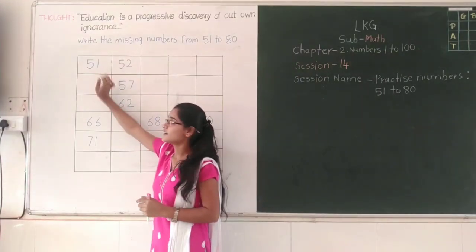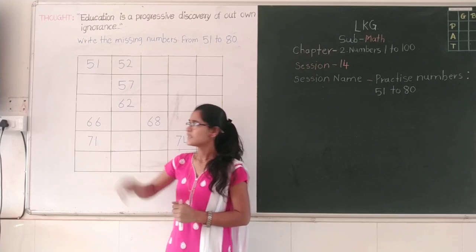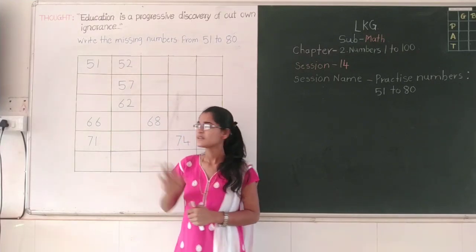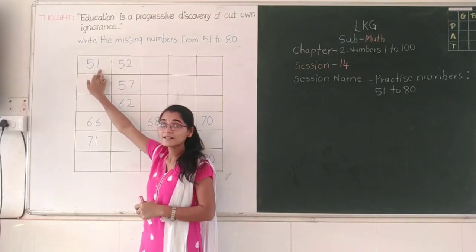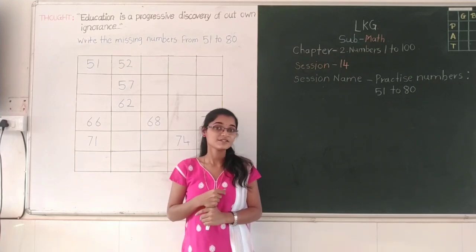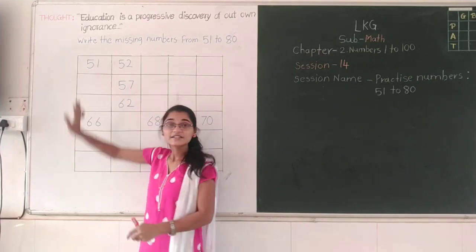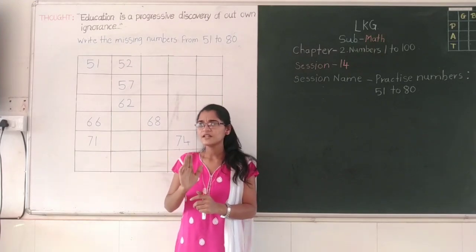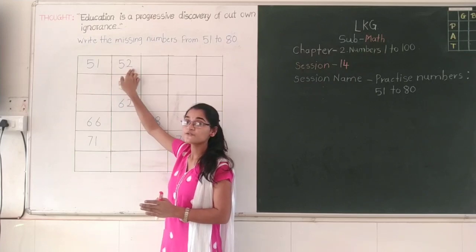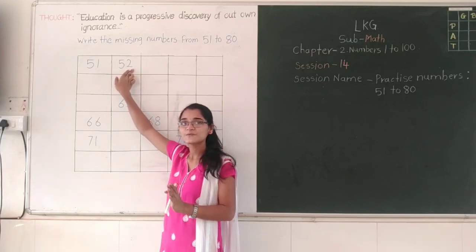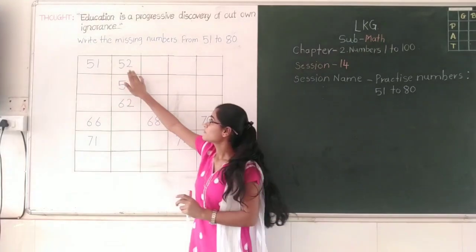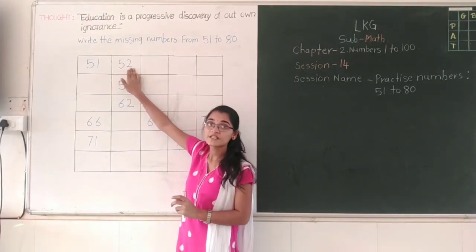Now look at the first number. Tell me, which number is this? 51. You have already learnt these numbers, right? 51. Now tell me, after 51, which number will come? 52. Right? 51, 52.